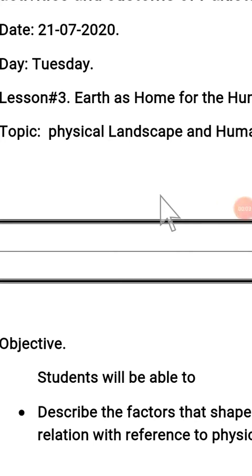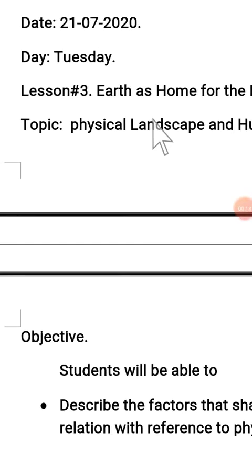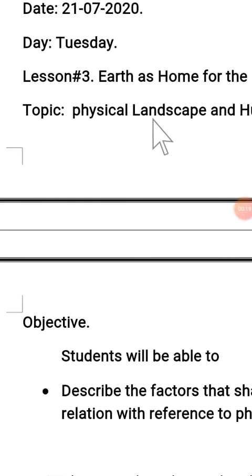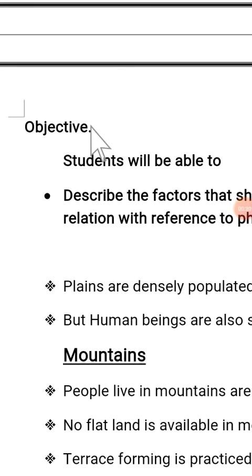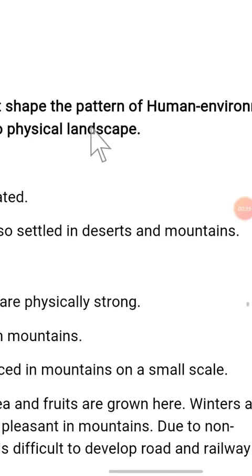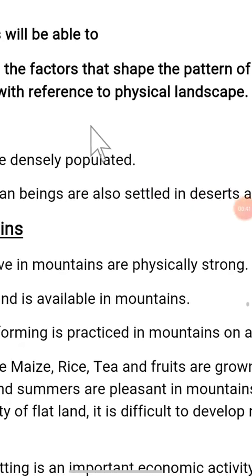Assalamu Alaikum students. Today the date is 21st of July and the day is Tuesday. Lesson number three: Earth has a home for human beings. The topic is physical landscape and human beings. Physical landscape means the different parts of the Earth that are visible, like mountains, deserts, rivers, etc. The objective is to describe the factors that shape the pattern of human environment with reference to physical landscape.